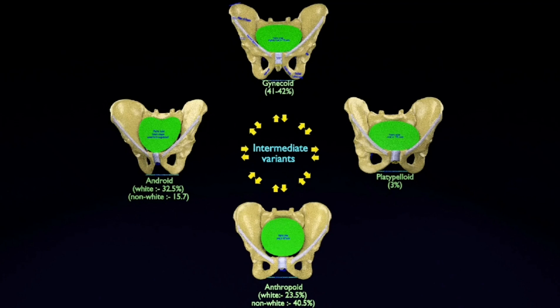The shape of the pelvis often differs between males and females. A female's pelvis is generally wider and more open than a male's pelvis. This helps with vaginal childbirth. In this video, we will be speaking about the female pelvis.